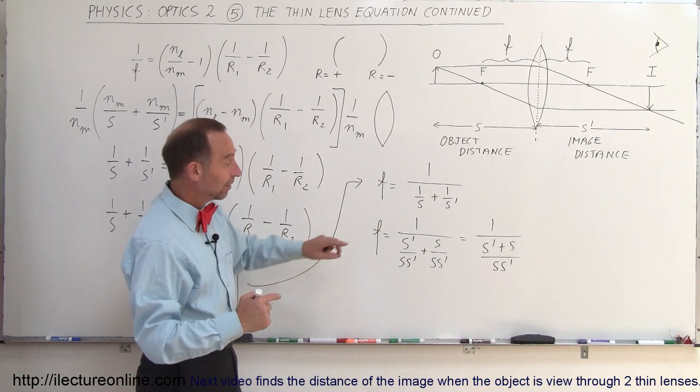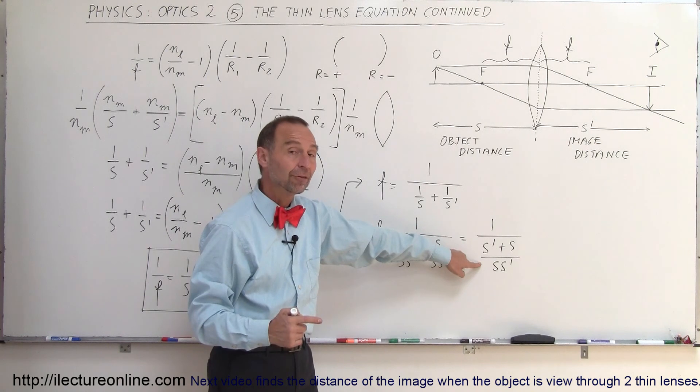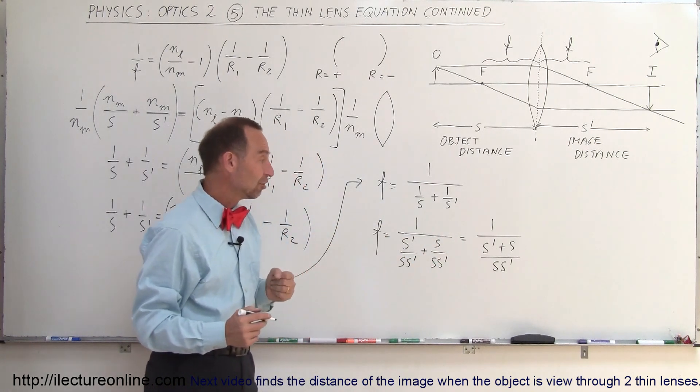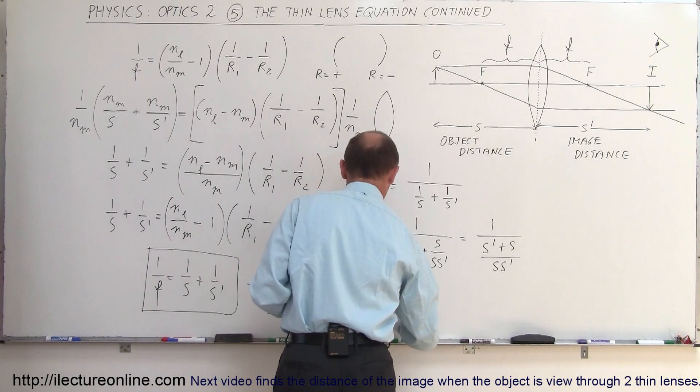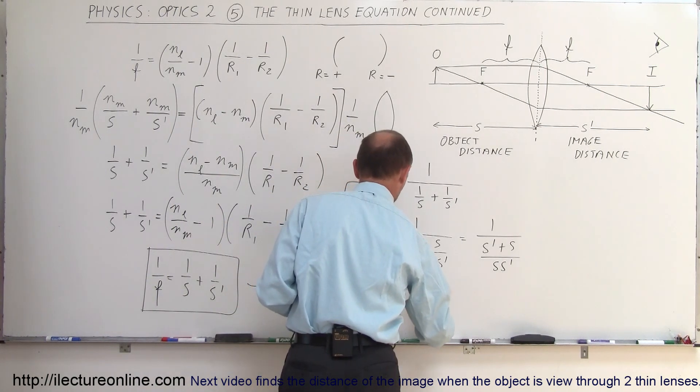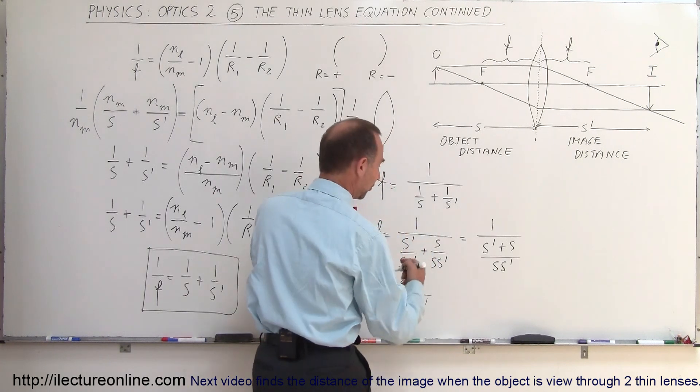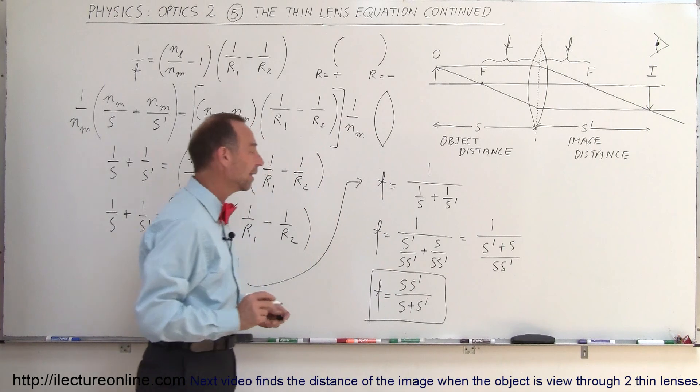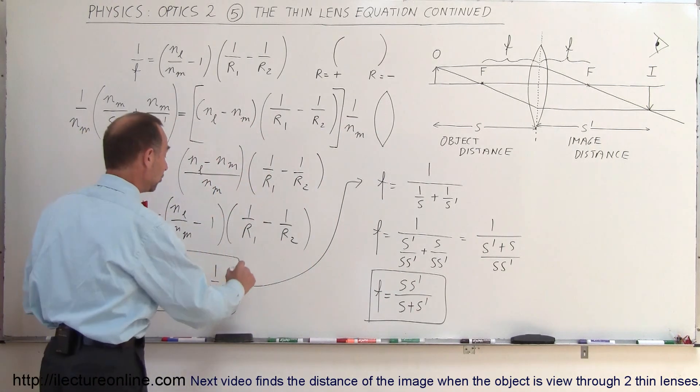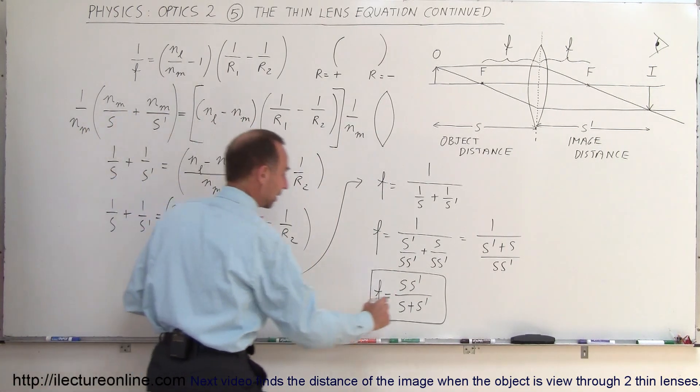Since I have 1 divided by a fraction, I can change that to 1 times the inverse of that fraction. So F equals SS prime divided by S plus S prime. Here's another form of the thin lens equation. These equations come in very handy when working with thin lenses.